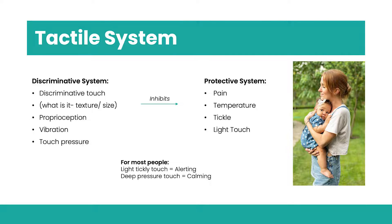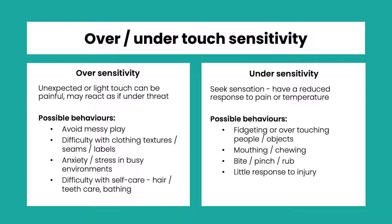For example, if you have an itchy mosquito bite, you dull down that horrible tickly sensation by scratching — using your discriminative system to calm it down. When your child has hurt themselves and you tell them to rub it better, you are encouraging them to reduce the pain from their protective system by using firm touch pressure from their discriminative system. For most people, light tickly or unexpected touch is alerting, whereas deep pressure touch is more calming.